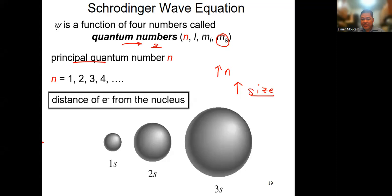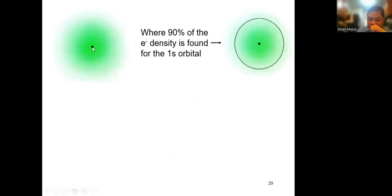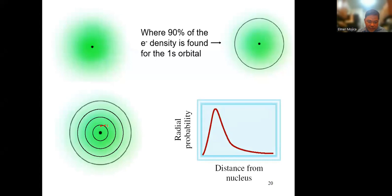If you look at this, N=1, N=2, N=3 — the higher the N, the farther the electron is from the nucleus, and the bigger the size of the whole atom. The small thing in the center is the nucleus. The 1s orbital shows the electron density — this is where you'll find 90% of the electron. The probability from the nucleus is shown for N=1, 2, 3, and 4.